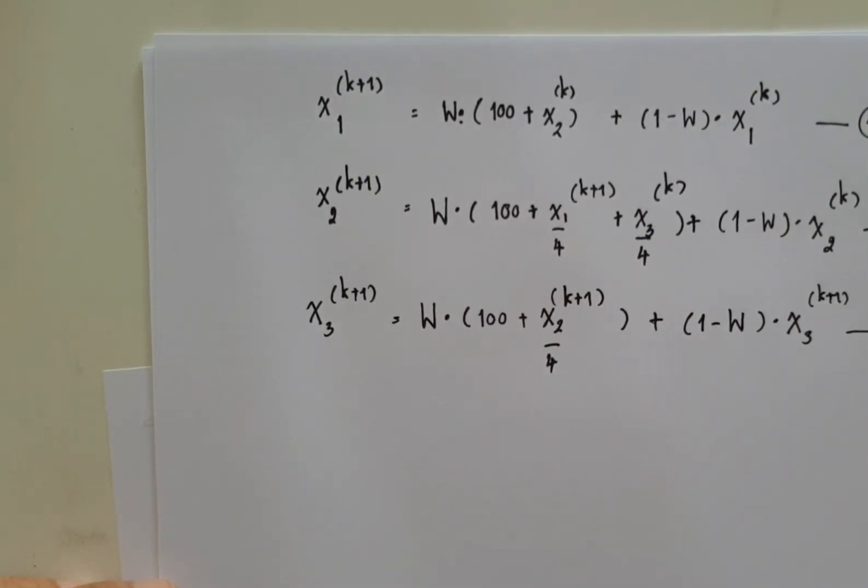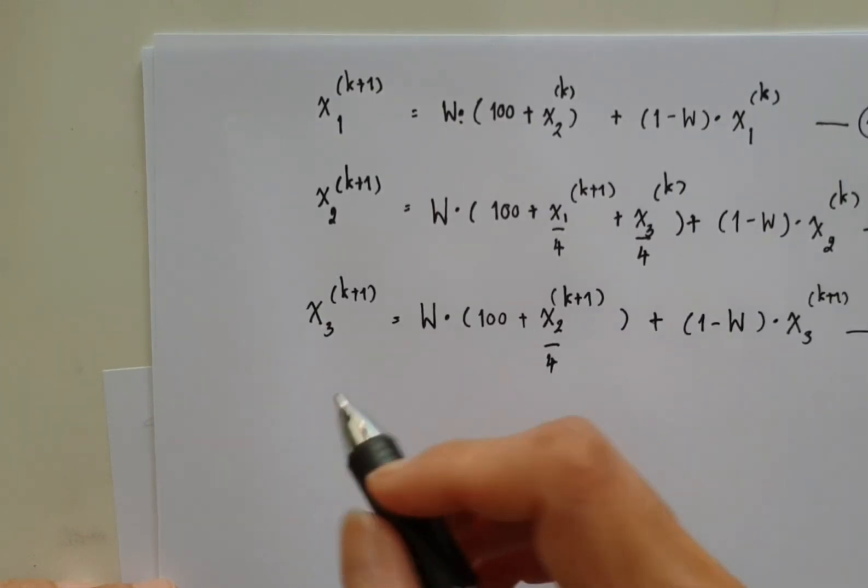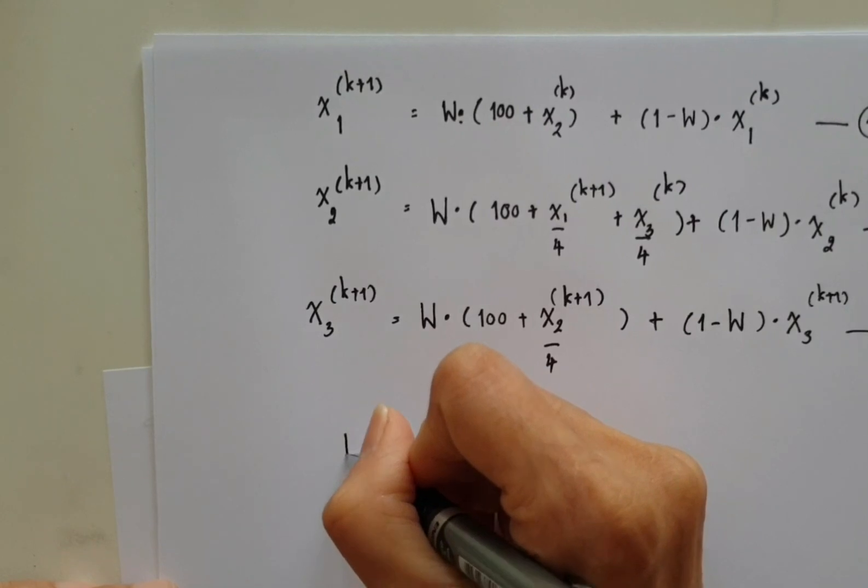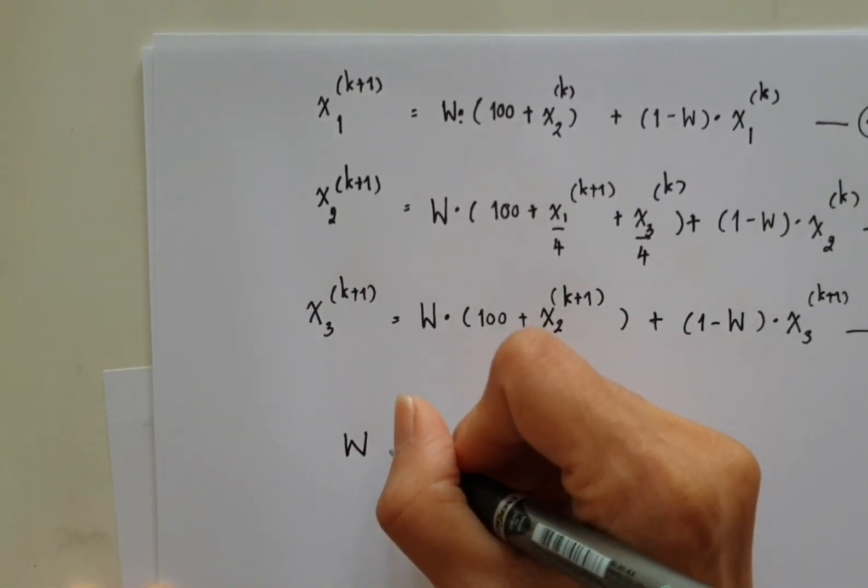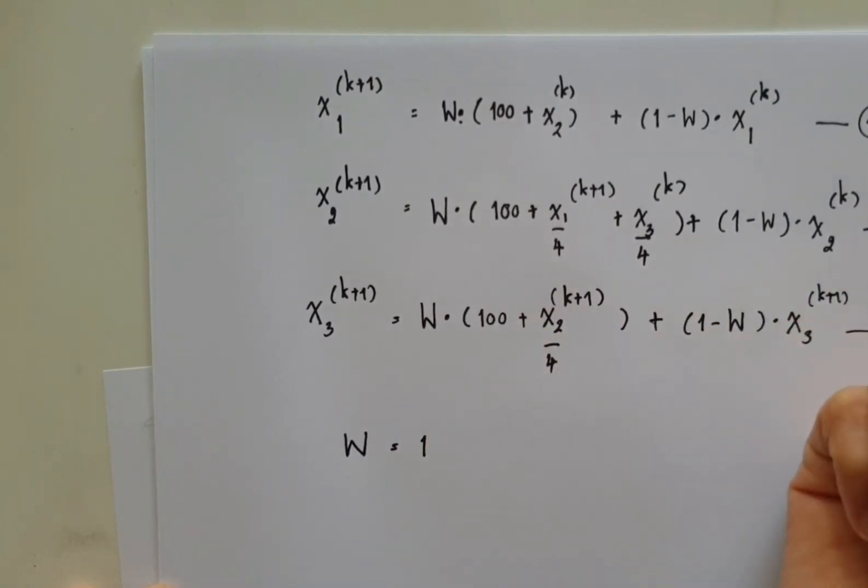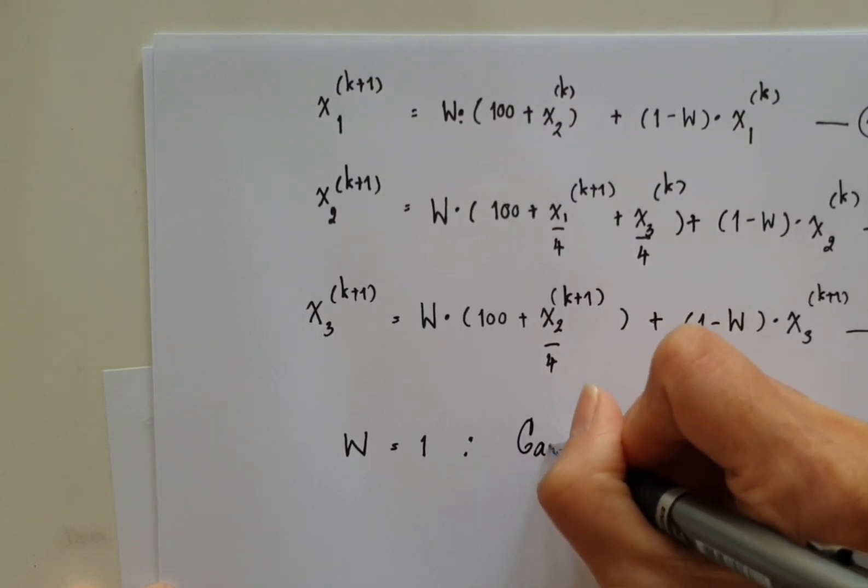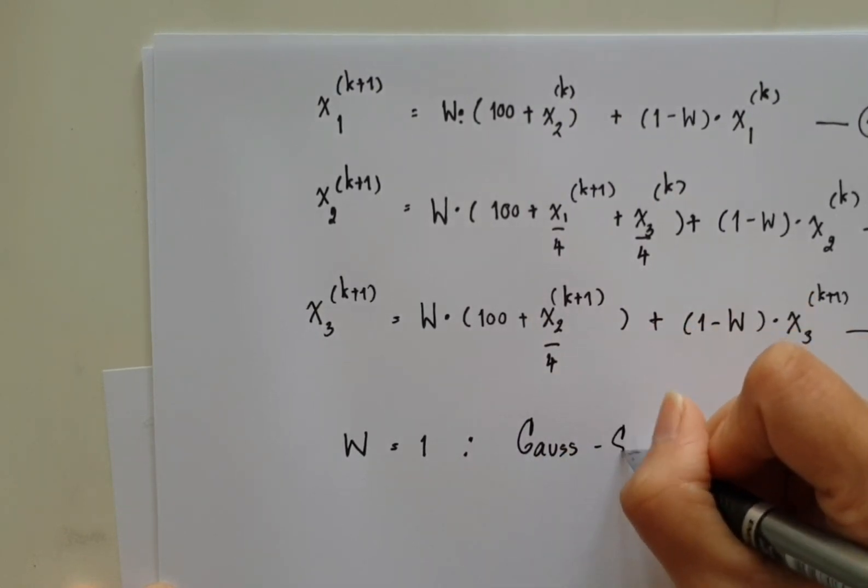And to solve this, you will see that if you set weight equal to 1, what we get will be Gauss-Seidel.